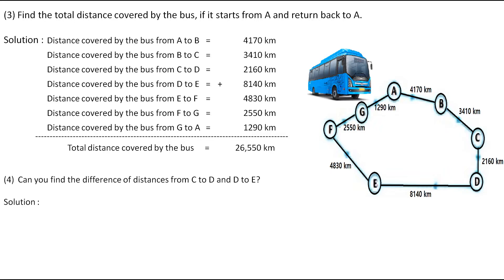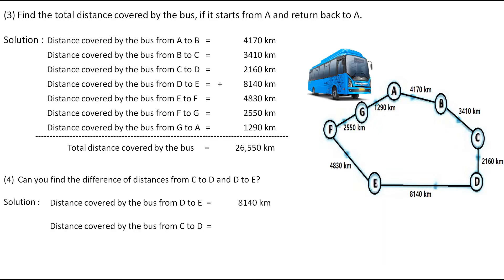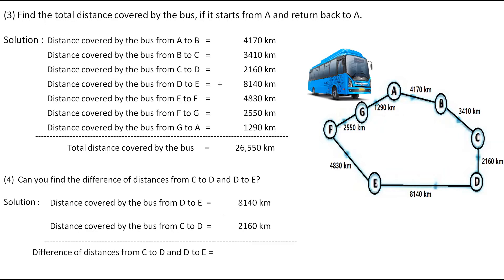The next question is: can you find the difference of distances from C to D and D to E? Of course we can find it out — for that we have to do a subtraction. The distance from D to E is 8140 km and from C to D is 2160 km. Subtracting, the difference of distances from C to D and D to E is 5980 km.